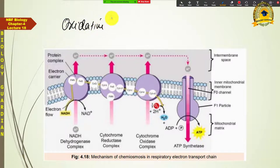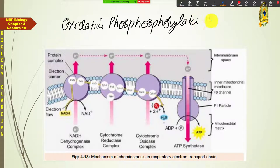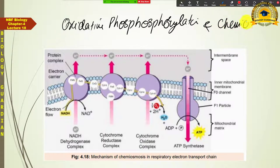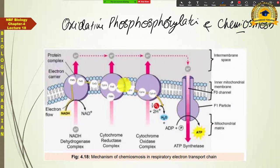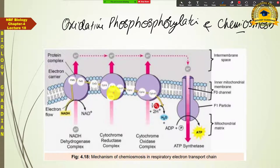Now the concept of oxidative phosphorylation and chemiosmosis should be clear. In prokaryotes, this process occurs through the cell membrane. All electron carriers in prokaryotes are embedded in the cell membrane, so this work happens through the cell membrane.